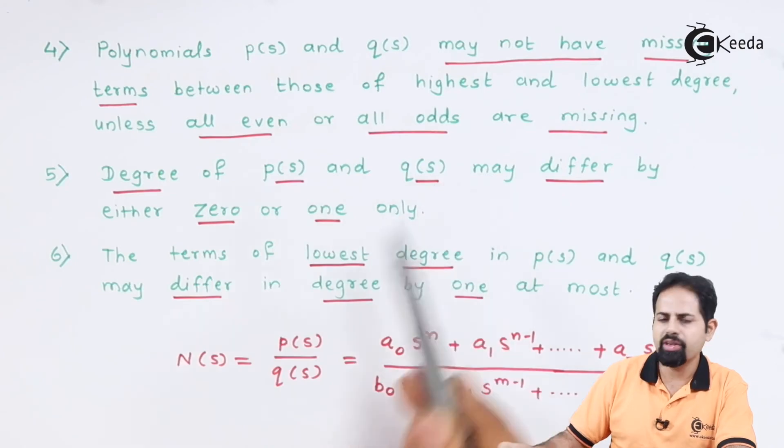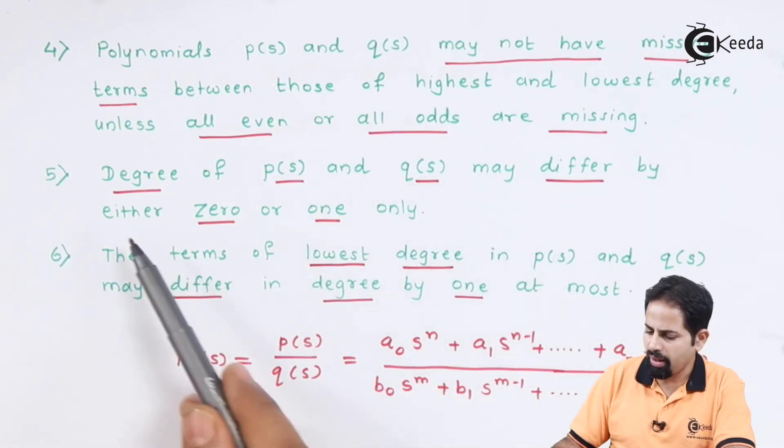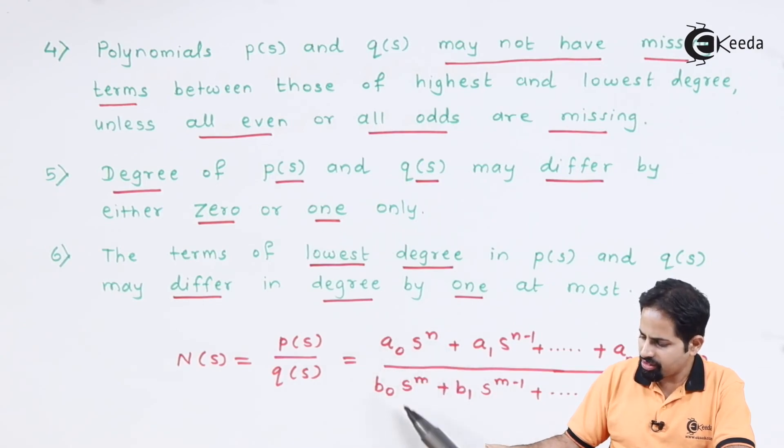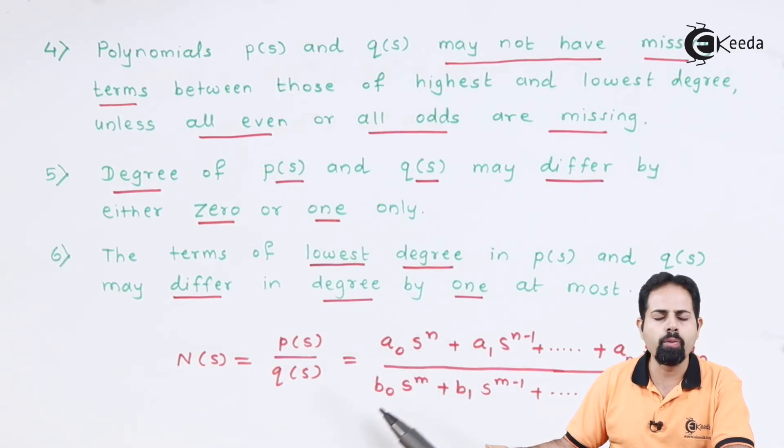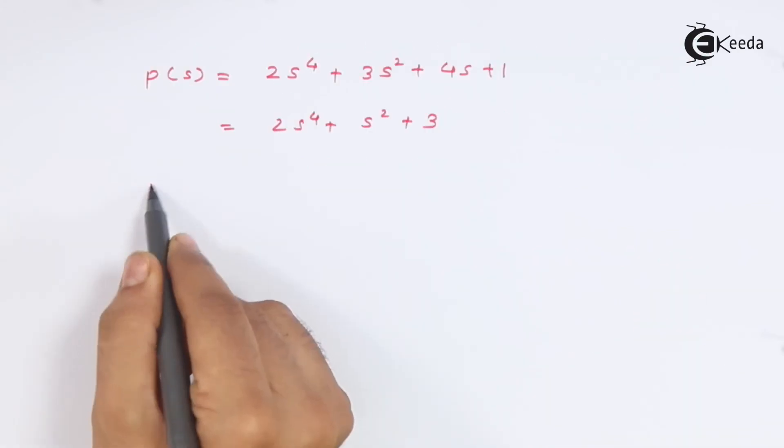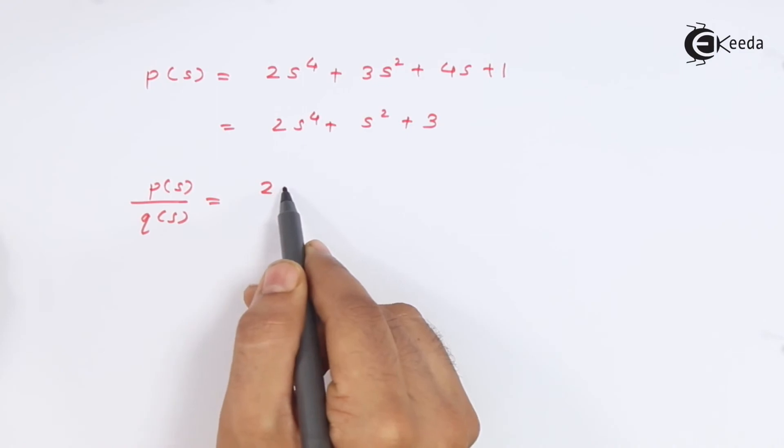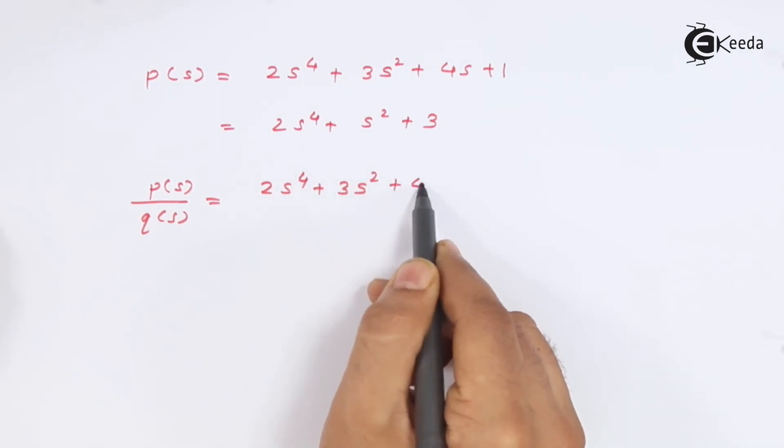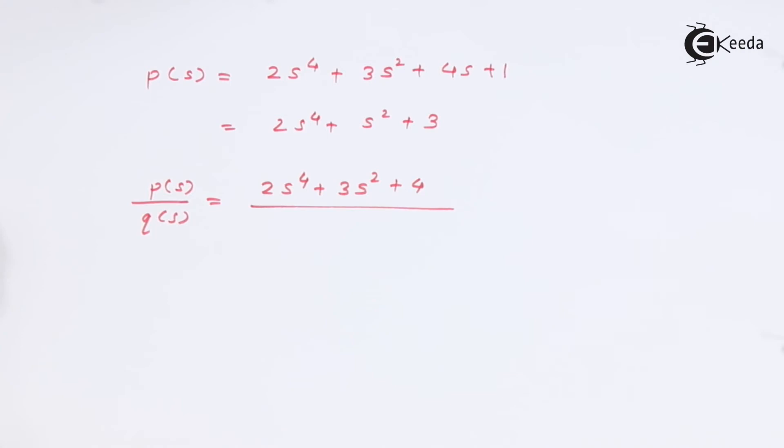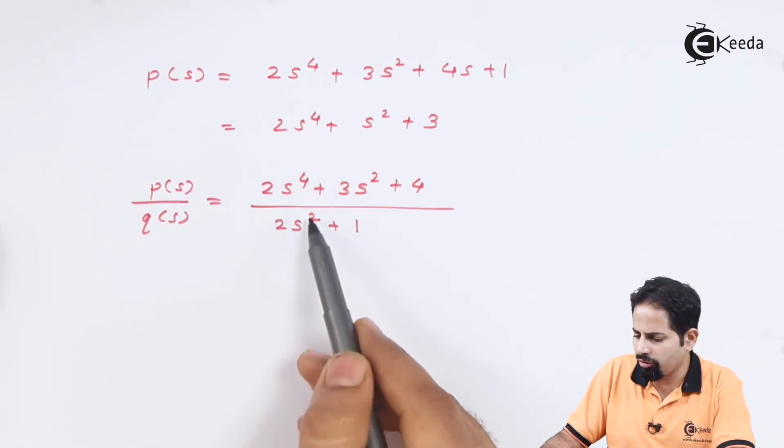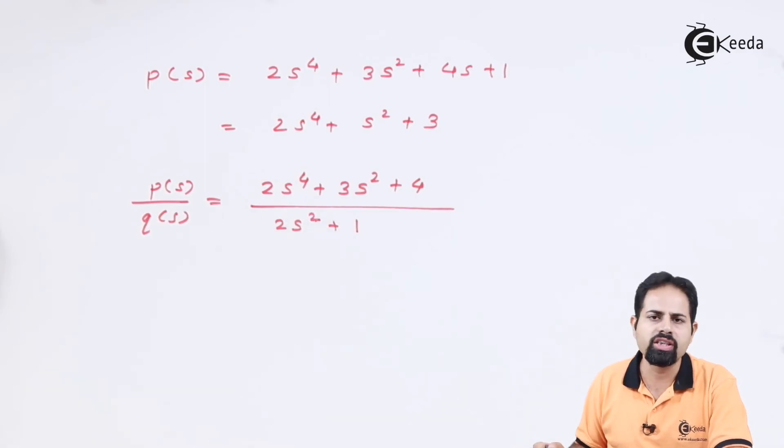Then degree of P of S and Q of S may differ by either zero or one only. That means highest degree of this P of S or Q of S. There should be maximum difference of one. Suppose you have P of S like this. And you have Q of S. So this is not allowed because maximum difference here is two, which is exceeding. Allowed difference is only one. This is four and this is two. So it is not allowed.